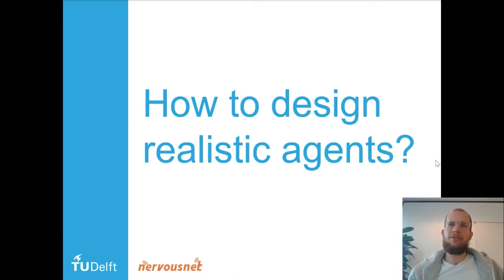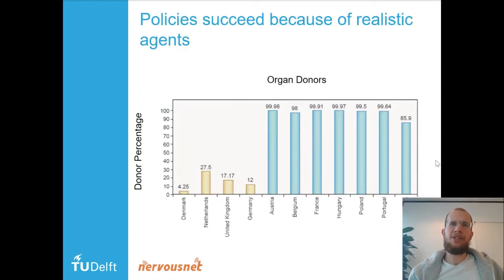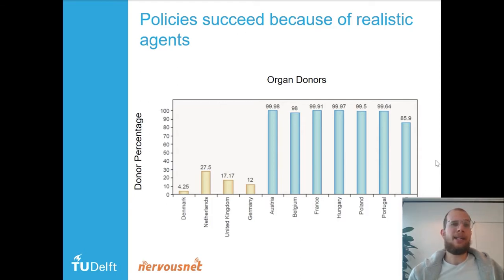So why is this relevant? Policies succeed because of realistic agents. You will see a graph about organ donors. On the y-axis is the donor percentage — the percentage of the population that is a donor. On the x-axis are several countries: Denmark, Netherlands, with a pretty low donor percentage.